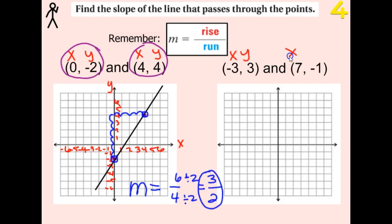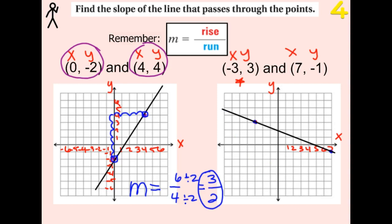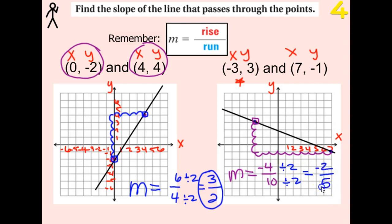Last one like this: x is negative three, y is positive three - that's the first point. Second point: x is seven, y is negative one. I'll draw the line through them and find my slope. Rising from the elevator - we're going down four, so negative four. Then running over ten. Simplify by dividing by two: negative four over ten becomes negative two over five. So there's my slope for this one.